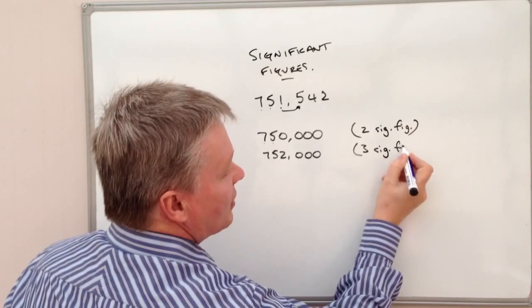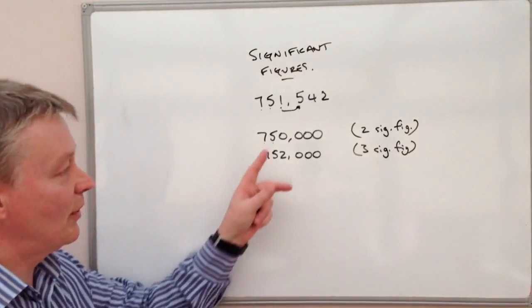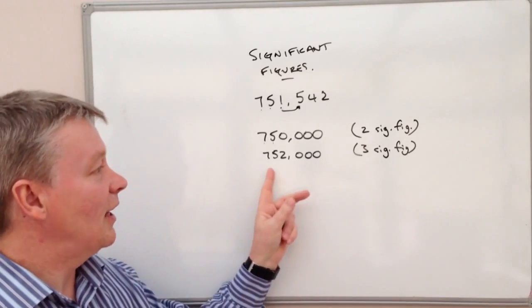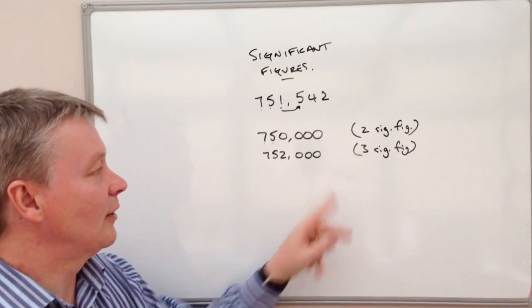So in other words, there's a 2,000 person difference between the two significant figure number and the three significant figure number.